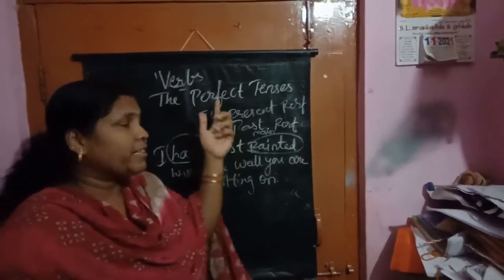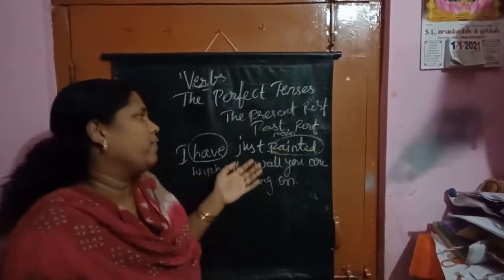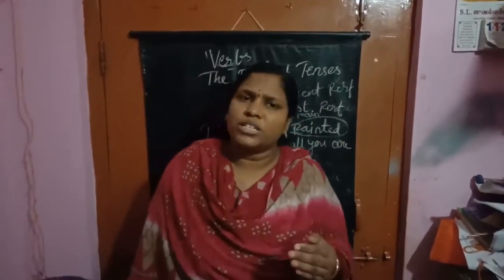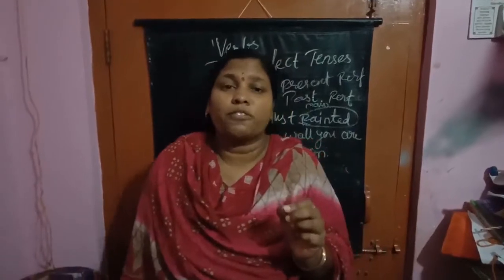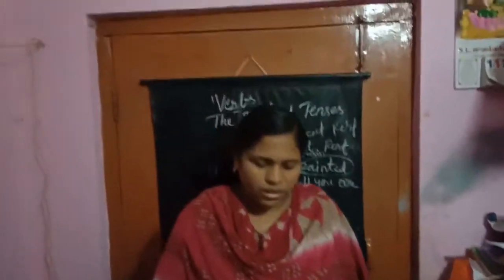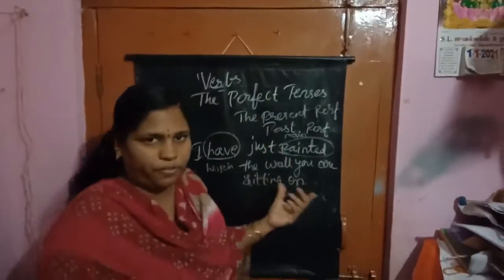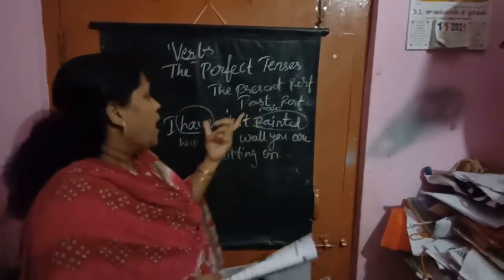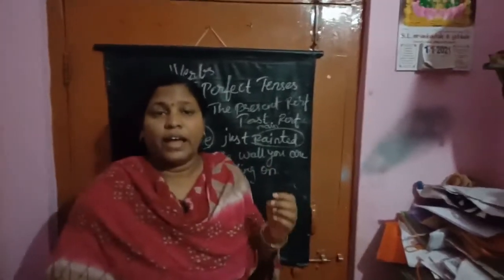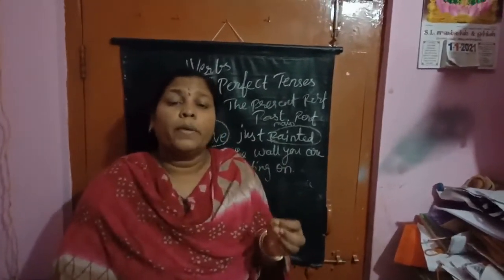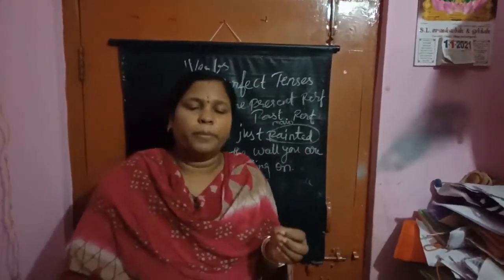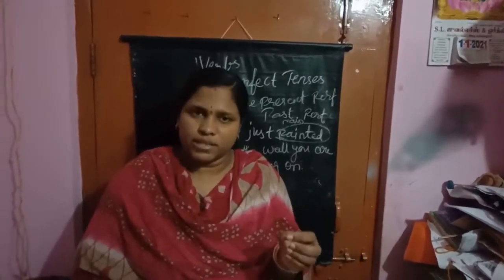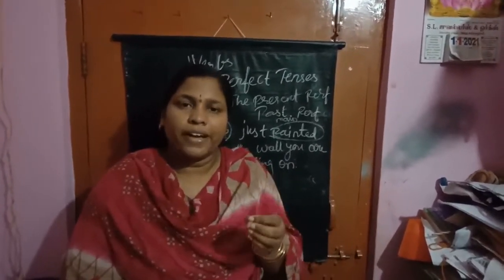When we are using has, have, or had with the main verb in the past participle form, then the sentence is called a perfect tense. In this, we have present perfect tense and past perfect tense. They are the perfect tenses.